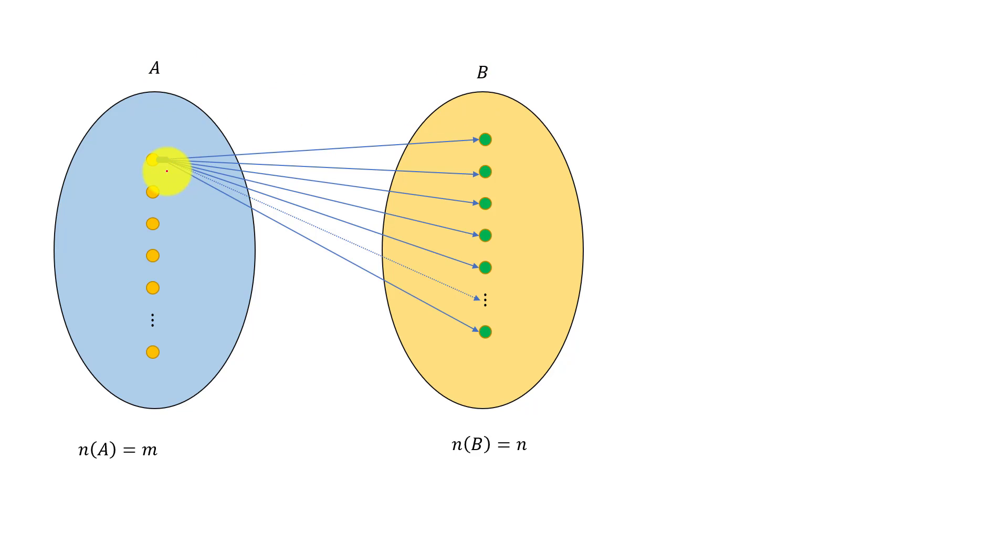The total number of such ways is n times n times n up to m times. Hence, the total number of functions from A to B is n to the mth power.